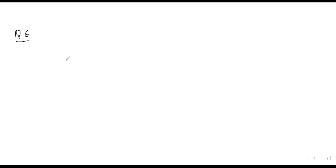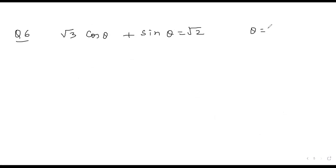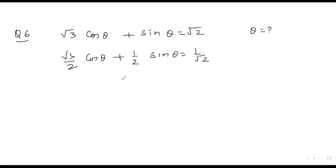Question number 6: if √3 cos θ + sin θ = √2, find the general value of θ. We divide each term by 2, giving (√3/2) cos θ + (1/2) sin θ = 1/√2.